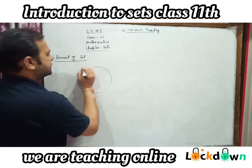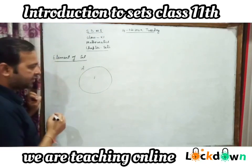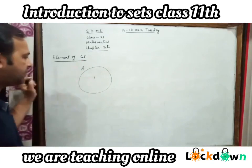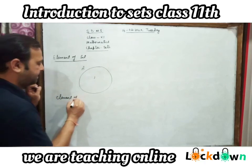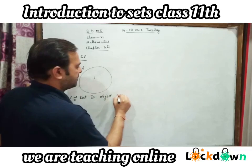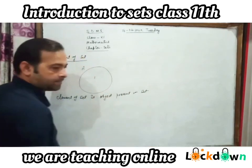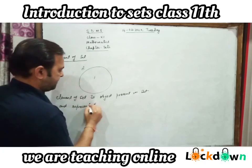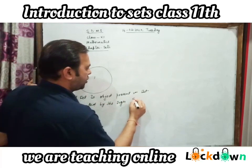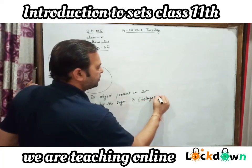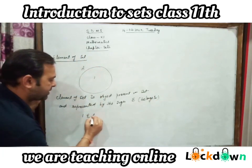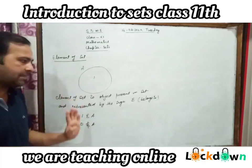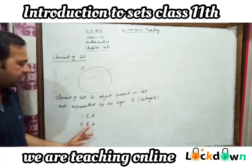Next is the element of a set. Suppose A is the given set. If 1 is present in set A, then we say 1 is an element of set A. An element of a set is an object present in the set, represented by the symbol 'belongs to' (∈). So we write: 1 ∈ A. But 0 does not belong to A, meaning 0 is not an element of set A.